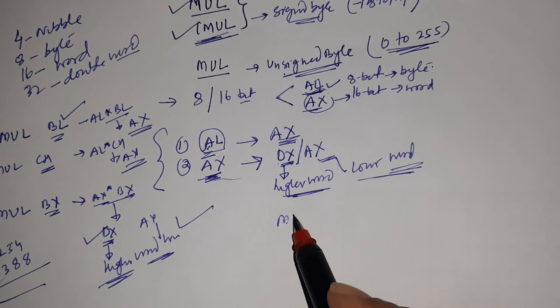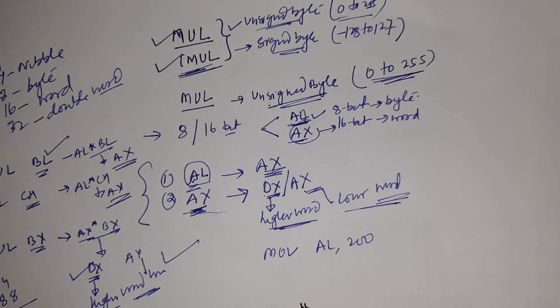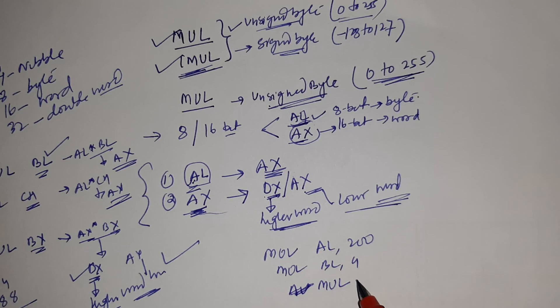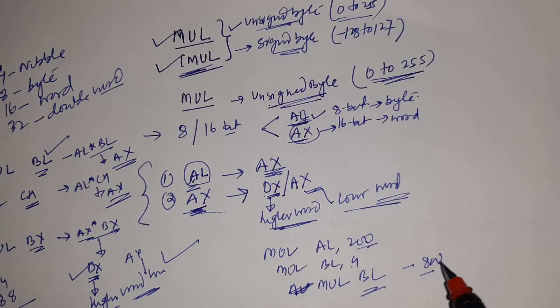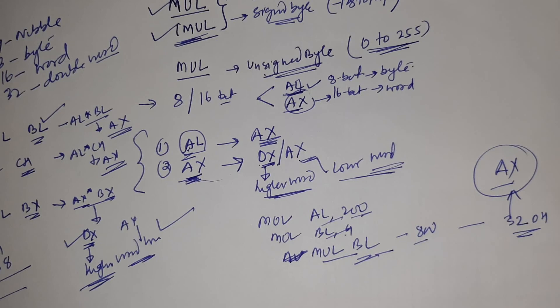For a concrete example: MOV AL, 200 (since the range is 0 to 255), MOV BL, 4, then MUL BL. Here 4 is multiplied into 200, giving 800, which in hexadecimal is 0320H. This result is stored in AX because both operands are 8-bit numbers.